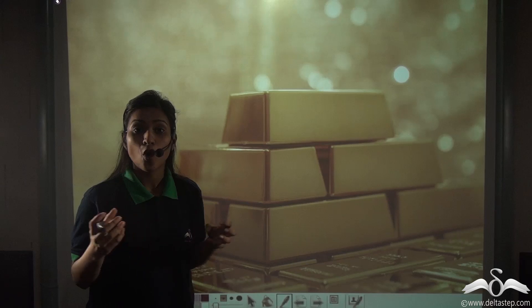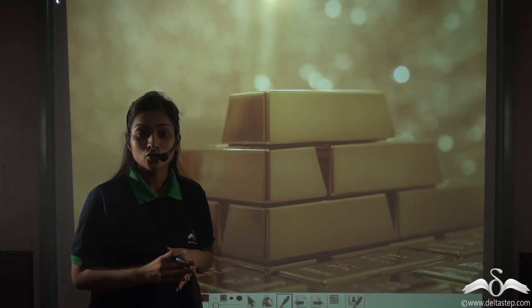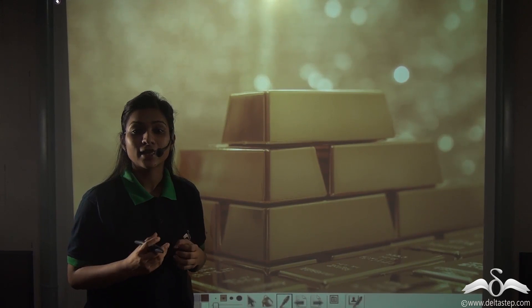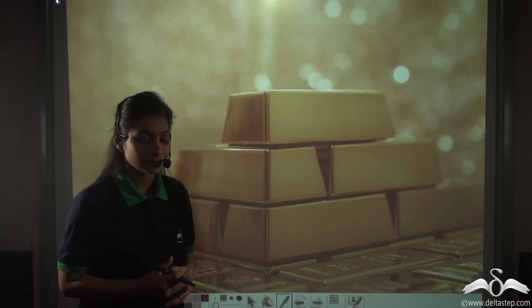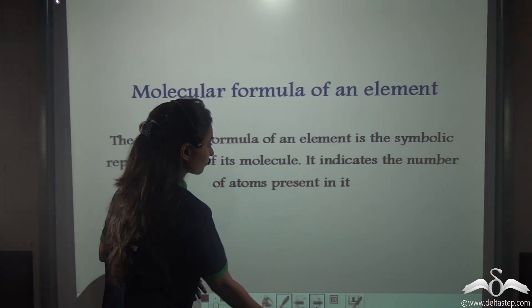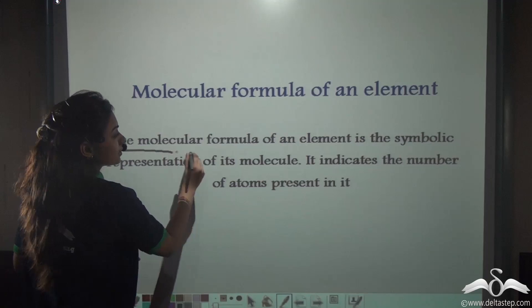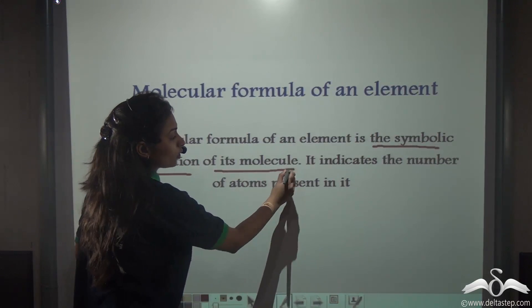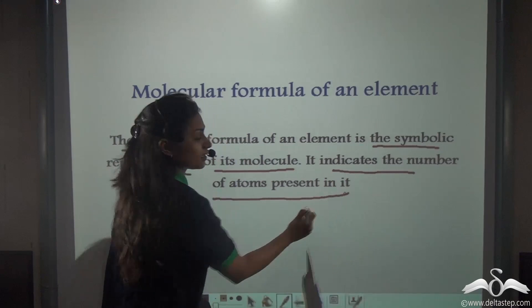They exist in pairs of two or three or so, so as to form a molecule. So the correct way to write them or represent them is writing their molecular formula. So what is the molecular formula of an element? Well, the molecular formula of an element is the symbolic representation of its molecule. This indicates the number of atoms present in it.